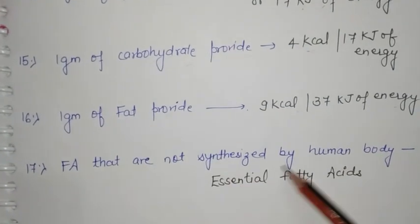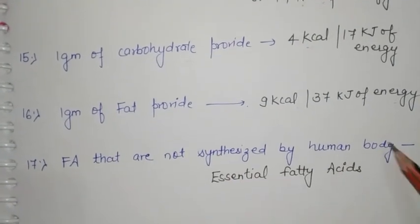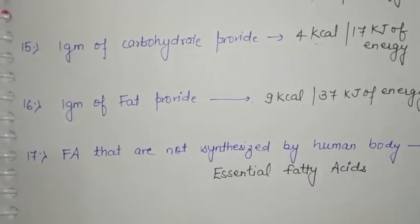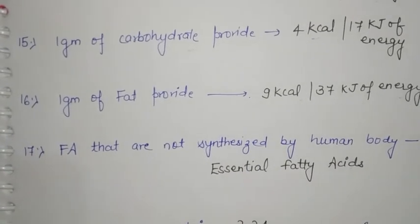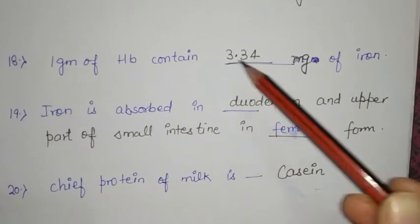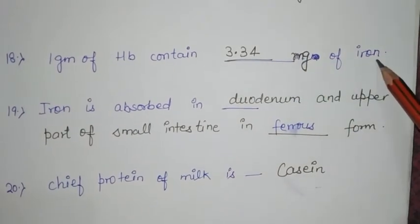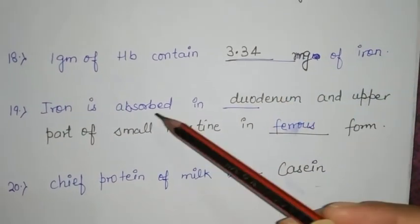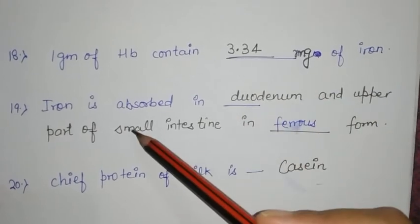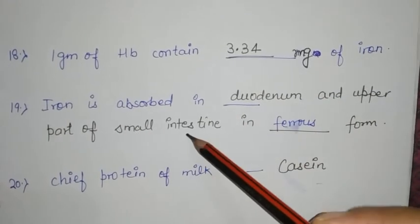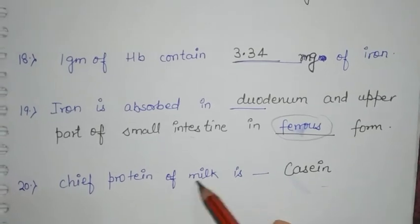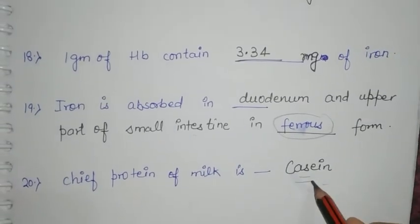Fatty acids that are not synthesized by the human body are known as essential fatty acids. 1 gram of hemoglobin contains 3.34 mg of iron. Iron is absorbed in the duodenum and upper part of the small intestine in ferrous form. The chief protein of milk is casein.